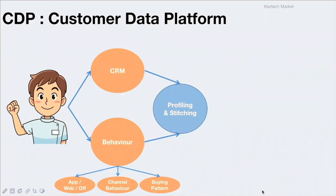Channel behavior refers to what kind of communication the user responds to, which channel the user is most active on — whether it's email, push notification, SMS, or WhatsApp — and what time of day the user responds to most communication. Buying pattern refers to what kind of product the user usually buys, the price range, and what kind of offer the user responds to and ends up buying.